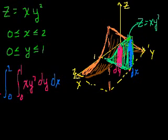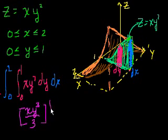So let's evaluate this inner integral. Hold x constant. What's the antiderivative of y²? It's y³/3, right? So it's y³/3. The x is a constant, right? And we're going to evaluate that at 1 and at 0.